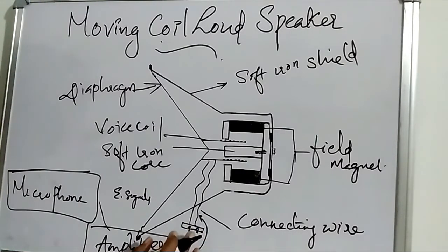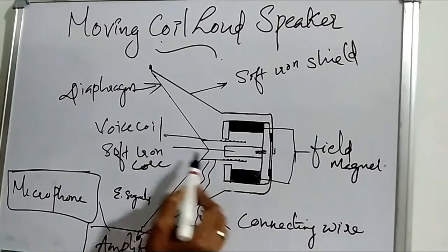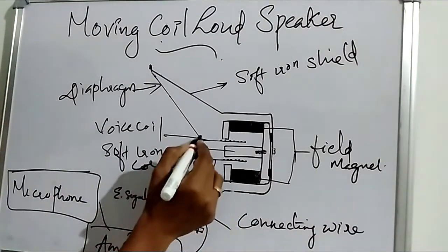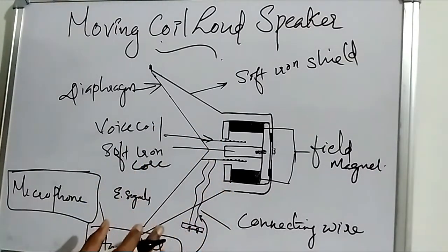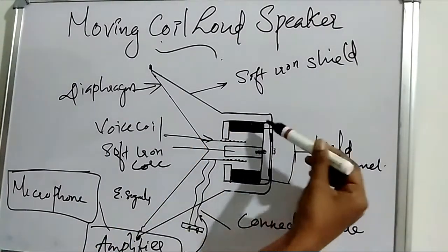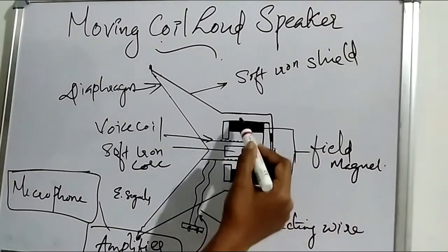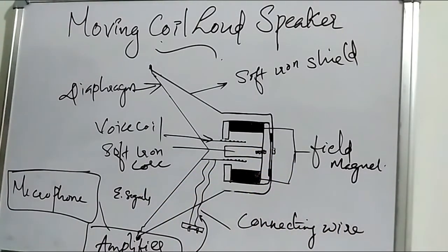The amplified signals travel through a pair of connecting wires to the voice coil. The electrical signals from the microphone are amplified and then transmitted to the voice coil. Once transmitted to the voice coil, two magnetic fields are present around it.